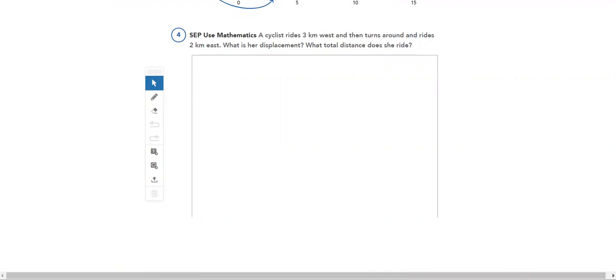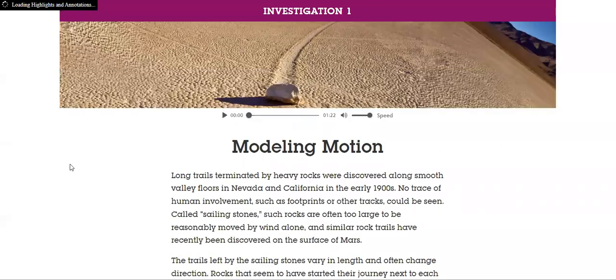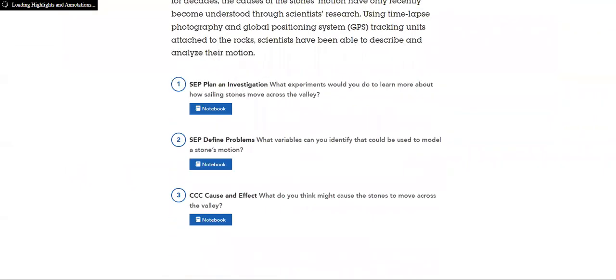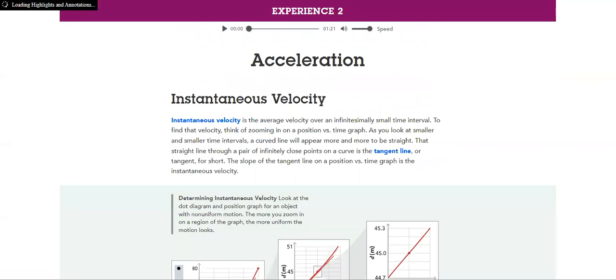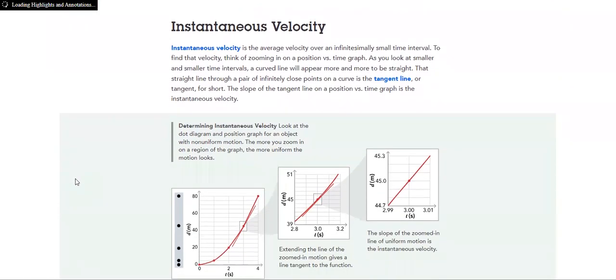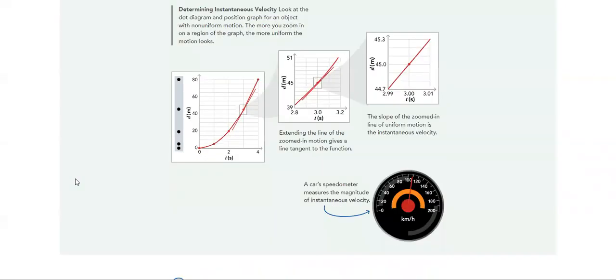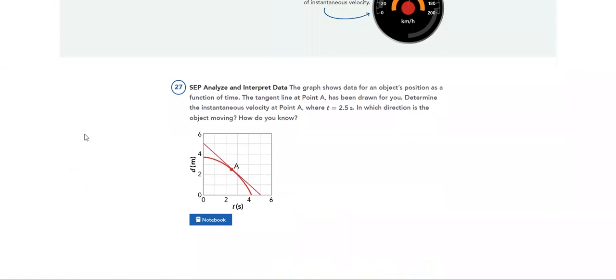Now, next we have Modeling Motion. How do I model motion? Then I have Acceleration. What is meant by acceleration? What's the difference between instantaneous velocity and average velocity? What is the odometer, and how is it read?